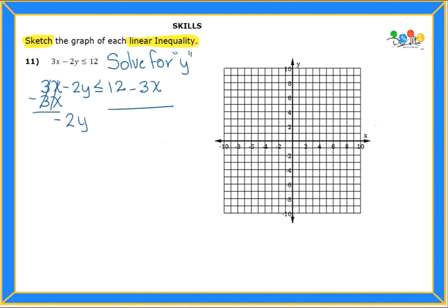Once I subtract the 3x on both sides, 3x minus 3x cancels out and I have negative 2y less than or equals to, and we're gonna switch the terms. I'm gonna move the negative 3x to the front, so this will be negative 3x plus 12. The next thing that I need to do to solve for y is get rid of the negative 2 which is multiplying the y. Therefore, I need to divide by negative 2.